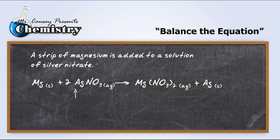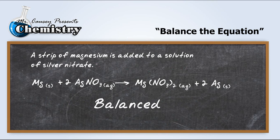Now we have two silver, but only one silver on the right. So we will multiply that by two, and check everything, and it's balanced. Alright, so now we have a balanced equation.